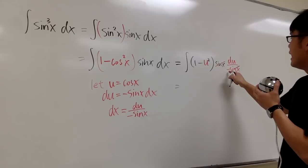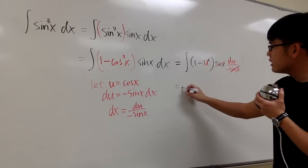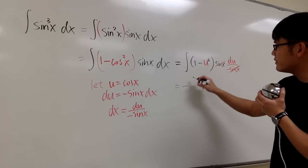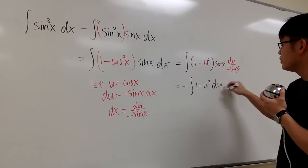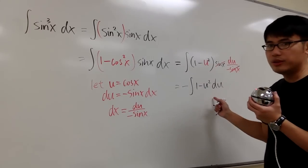And then, we can just convert this integral. When you're in the u world, it's just a polynomial. I can take out the negative in front. So we can just look at the negative integral, and inside here is 1 minus u squared du. And this will be pretty easy to integrate.